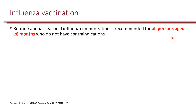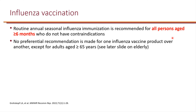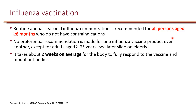CDC recommends routine annual seasonal influenza immunization for all persons aged 6 months or older who do not have contraindications. There are no preferential recommendations for one influenza vaccine product over another, except specifically for adults aged 65 years or older, which we will cover on a later slide.